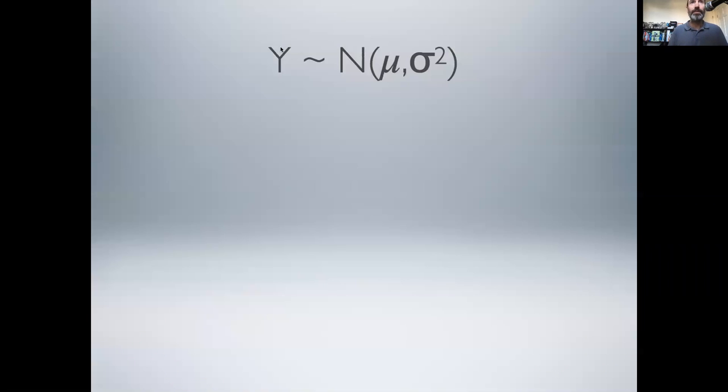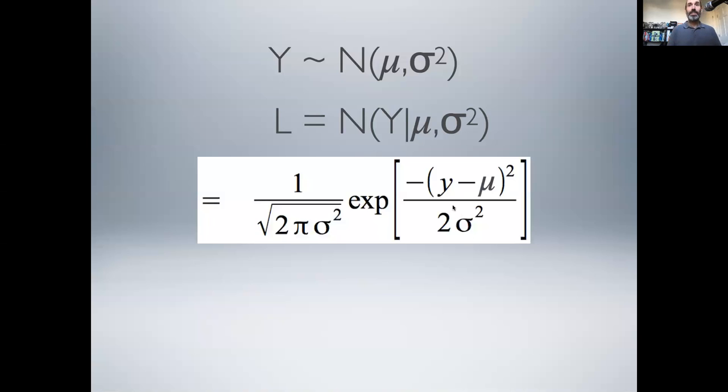We said that we think of Y as being distributed normally around a specific mean μ and σ standard deviation, and that tilde we would read as distributed as. So it's equivalent of saying that our likelihood is a normal distribution where we're asking about the probability of generating data point y given a specific choice of mean and standard deviation. So to proceed forward, we then need to go and look up the equation for what a normal distribution actually looks like.